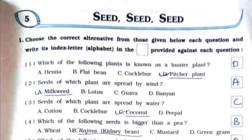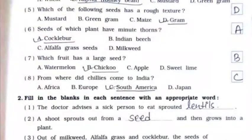Fourth: which of the following seeds is bigger than a pea? It's option B, rajma, that is kidney bean. Fifth: which of the following seeds has a rough texture? It's option D, gram. Sixth: seeds of which plant have minute thorns? It's option A, cocklebur. Seventh: which fruit has a large seed? It's option B, chiku.